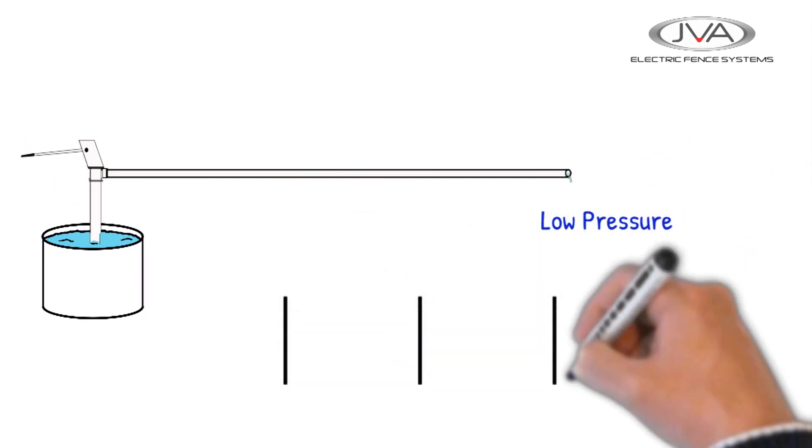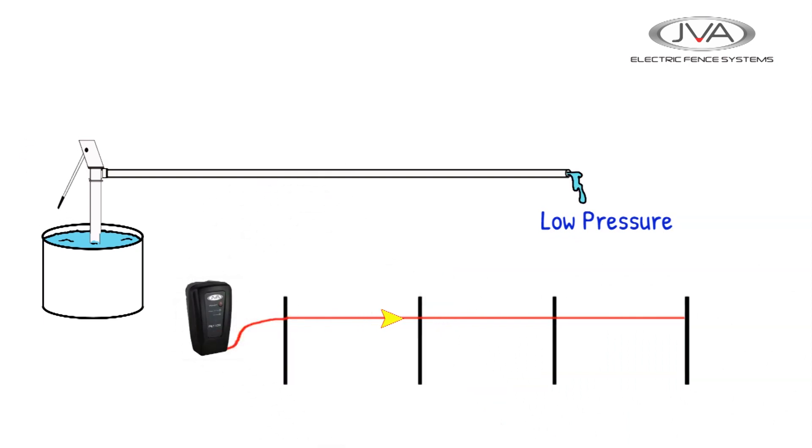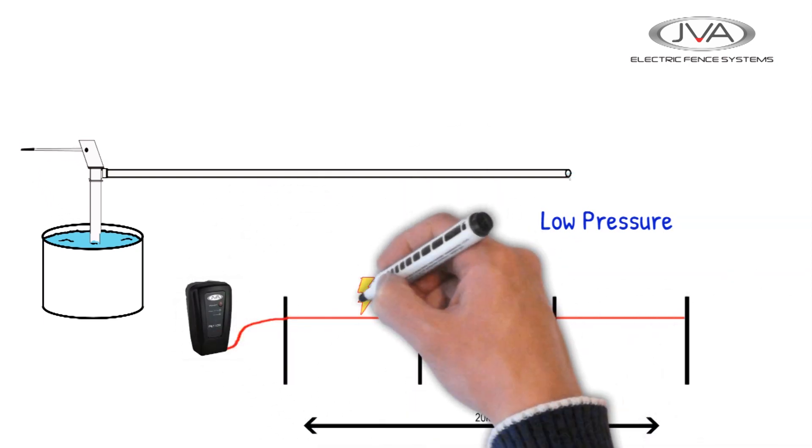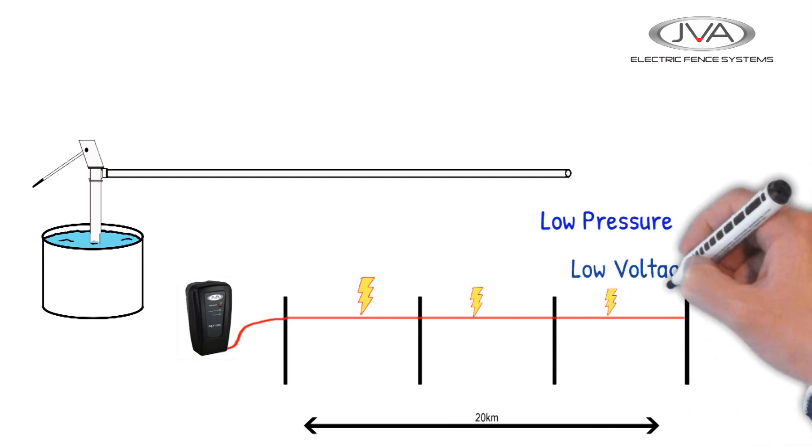The same can be applied to an electric fence. If we have a long single strand wire, let's say about 20 km long, and a small energizer, over the distance, friction causes electric pressure or the voltage to drop.